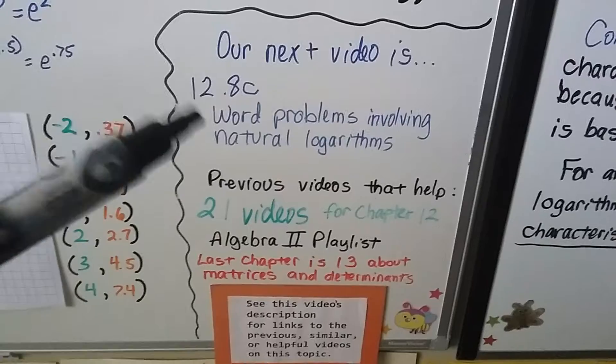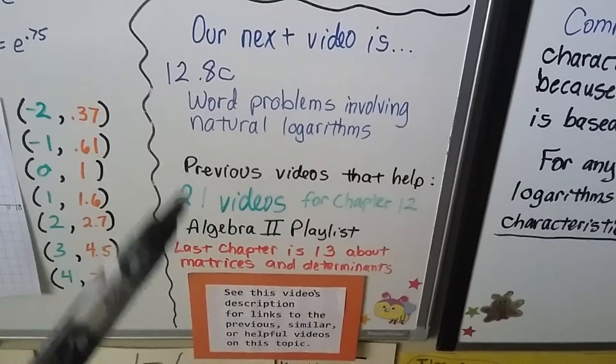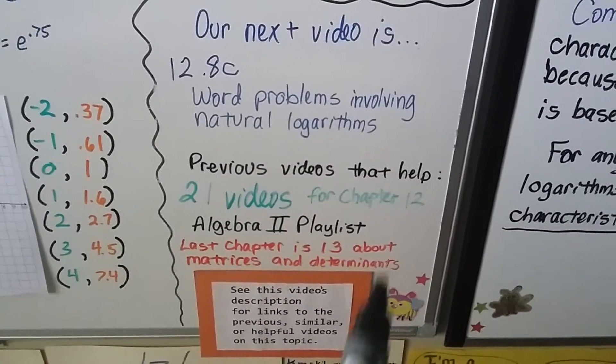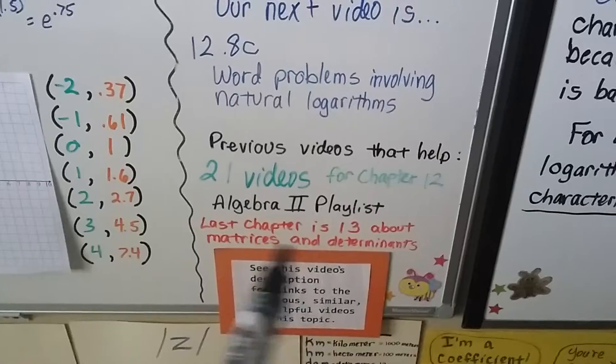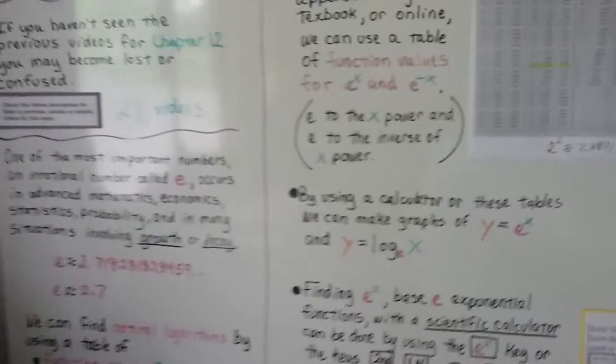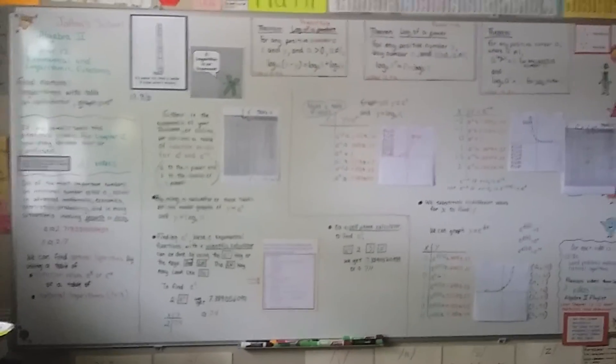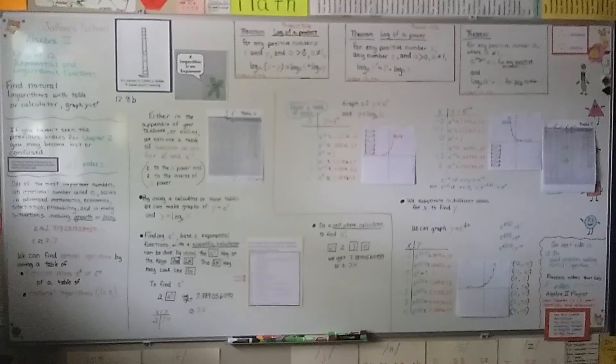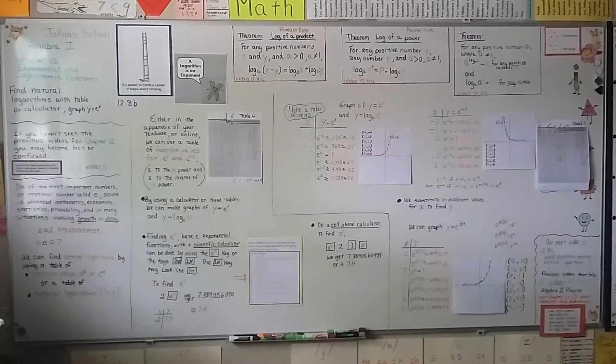That was a lot of information. I'm hoping it was helpful. Our next video is 12.8c, and we're going to talk about actual word problems involving natural logarithms that are going to talk about decay or growth. The 21 videos for this chapter are going to be linked in this description for chapter 12. Just to let you know, our last chapter is going to be chapter 13, and we're going to talk about matrices and determinants. We're almost at the end of chapter 12. We only have a couple more videos to go, and then we're going to be in 13, and then we're going to be done with Algebra 2. Then I'm going to pat you on the back and say, have fun in calculus. I will see you next video. Have a great day. Bye bye.